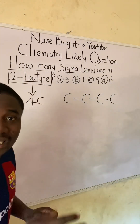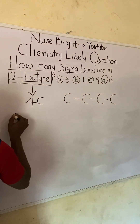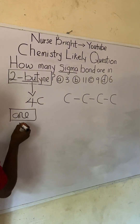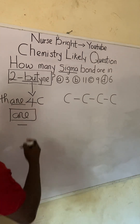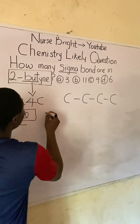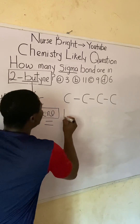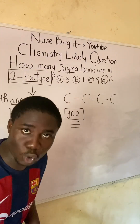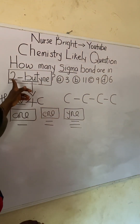We have to understand some introductory concepts here. Whenever an organic compound's name ends with '-ane,' like in methane, you know that compound has a single bond. But if it ends with '-ene,' you know that compound has a double bond. And if it ends with '-yne,' you know that compound has a triple bond. This is something you must take note of. This compound ends with '-yne' — butyne — so it must have a triple bond.